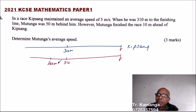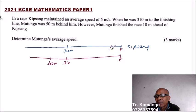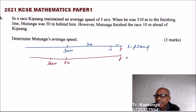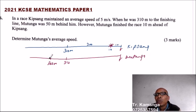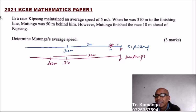Mutunga was 50 meters behind Gipsang, so Mutunga was 360 meters from the finishing line. When Mutunga finished, Gipsang still had 10 meters to go, meaning Gipsang covered 300 meters in that same time. So in the same time period, Mutunga covered 360 meters and Gipsang covered 300 meters.